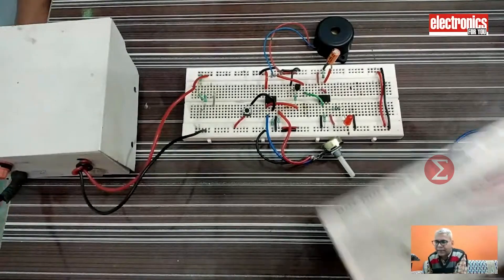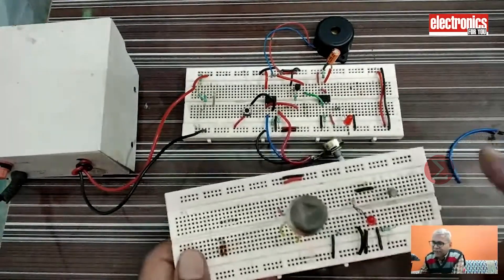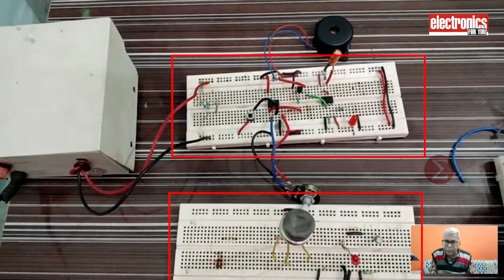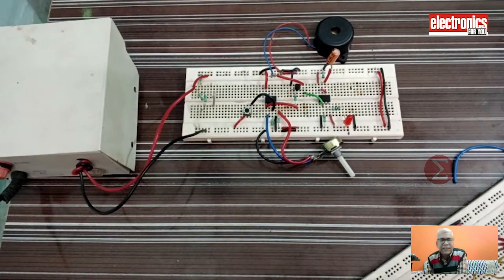Here you can see the MQ2 sensor. This is the heart of this circuit. We have not connected this sensor to our prototype. This is our prototype circuit. In our prototype, we have used a push button to represent the gas leakage and an LED to represent the kitchen exhaust fan.